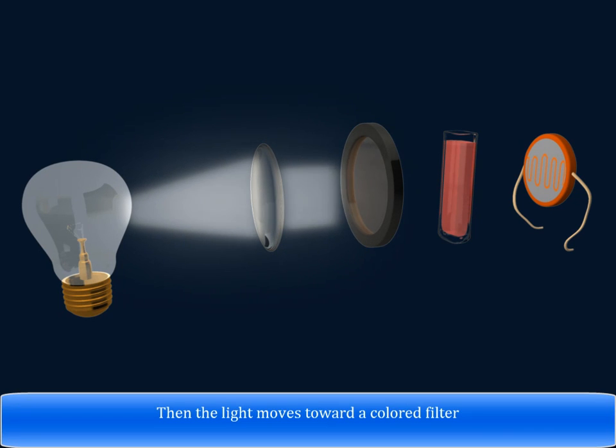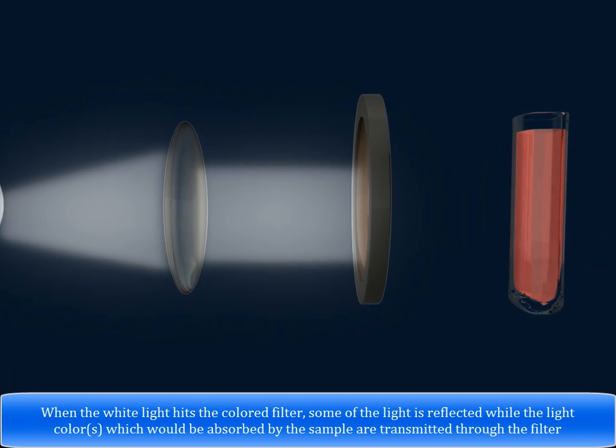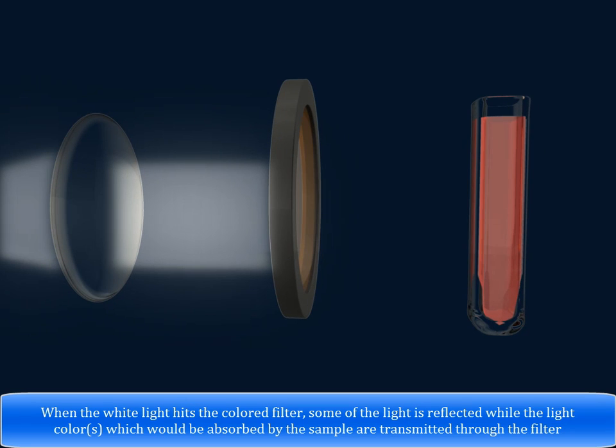Then, the light moves toward a colored filter. When the white light hits the colored filter, some of the light is reflected, while the light colors which would be absorbed by the sample are transmitted through the filter.